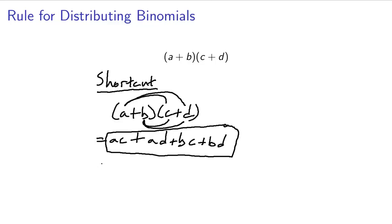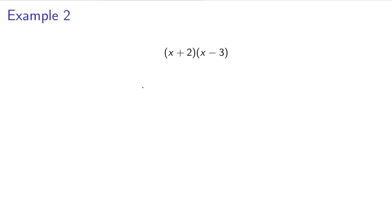You may have heard of something called FOIL before. I would say avoid that, because it's just not a very good method. It may seem easy, but it makes things more difficult in the long run. If you don't know what FOIL is, you're good — don't worry about it. It's a mnemonic that a lot of high schools use, but I think it's a terrible idea. So let's go ahead and do an example of multiplying two binomials together.